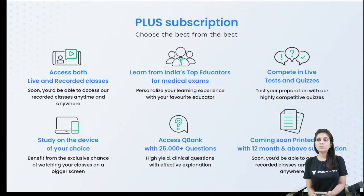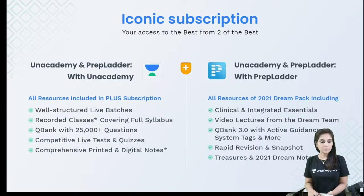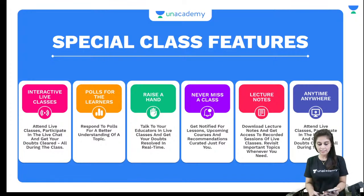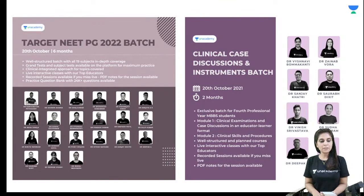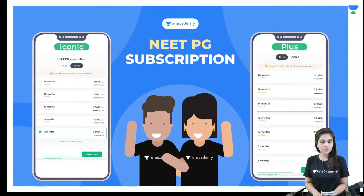A Plus subscription gives you access to both live and recorded content with 25,000 plus questions, most of which are clinical case-based and framed based on the latest exam pattern, with detailed explanations. An Iconic subscription gives you access to both the academy and PrepLadder platform. Special class features include live chat interaction and a raise-hand option for real-time interaction with the educator.